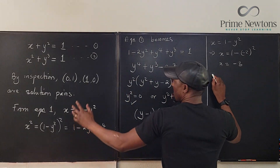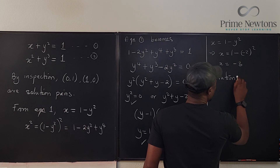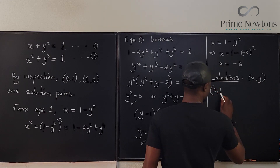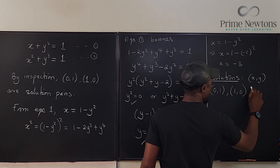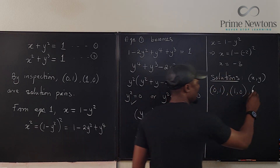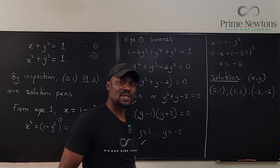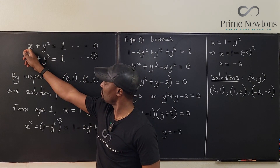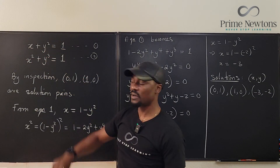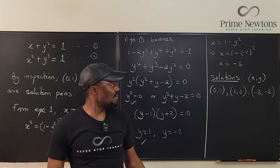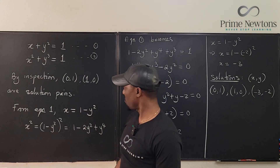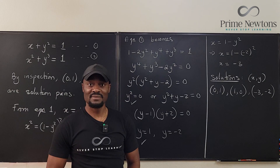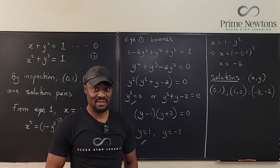So what we have now are all three solution pairs: (x, y) = (0, 1), (1, 0), and (−3, −2). I wondered if we could switch the last pair — when x is minus two and y is minus three — but no, that doesn't work. Based on what we've seen, there are no other solutions. Never stop learning; those who stop learning stop living. Bye-bye!